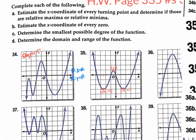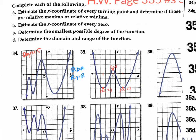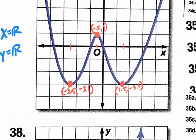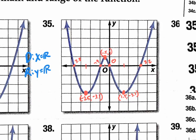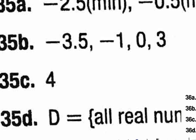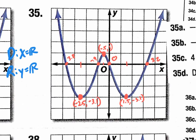Part B for number 35: estimate the x-coordinate of every zero. The zeros are approximately negative 3.5 or 3.8, negative 1, zero, and 3.1 or 3.2. The book's answers are negative 3.5, negative 1, 0, and 3 — so negative 1 works rather than negative 0.9.